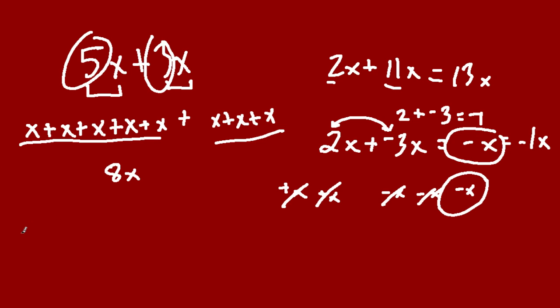Subtraction works the same way. If we had 5x minus 3x, the answer would be 2x's. If you take 3 x's from 5 x's, there are 2 x's left over.